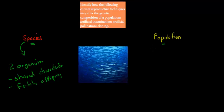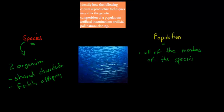A population is all of the members of a species in any given area. For example, we have a large collection of fish here — these are all the same fish. One of these fish belongs to a certain species, and all of them together form the population. That word 'population' is used in the dot point.